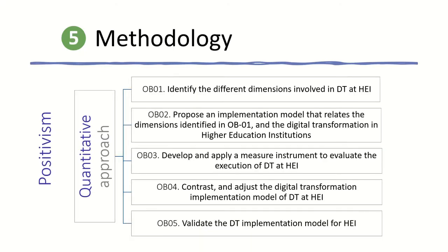This thesis uses a quantitative approach, with positivism as its epistemological support. There are five specific objectives: identify the different dimensions; propose an implementation model relating those dimensions; develop and apply a measurement instrument; contrast and adjust the digital transformation implementation model; and validate the digital transformation implementation model.